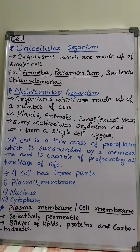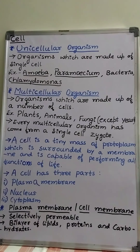In some organisms we can observe different kinds of cells. For example, in human beings we can observe different kinds of cells like smooth muscle cell, blood cells, nerve cells, fat cells, bone cells, sperm, egg, etc. All these cells are of different kinds.